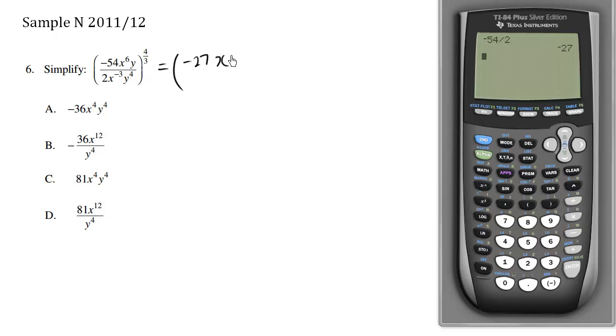So we have x to the 6 minus negative 3. We're subtracting the top exponent minus the bottom exponents. We have two negative signs which turn into a positive. You can skip this step if you want to write positive right away.